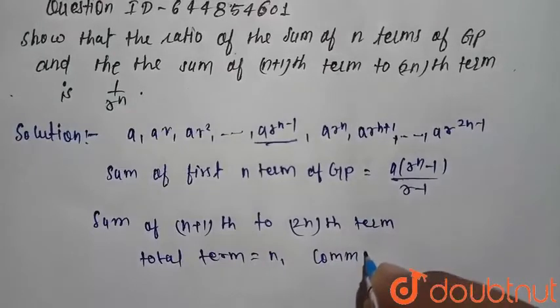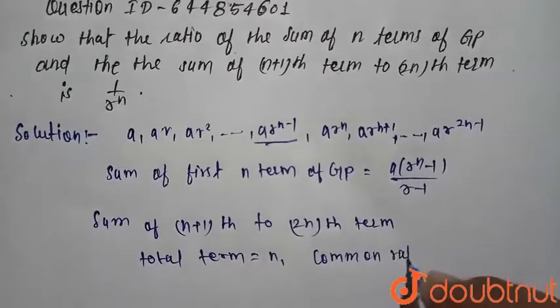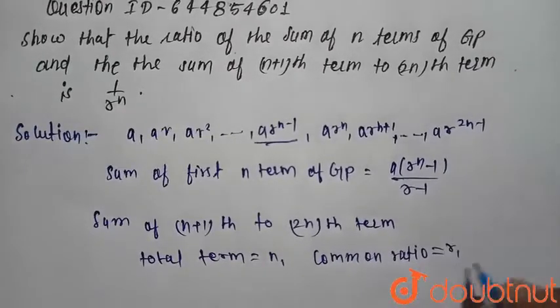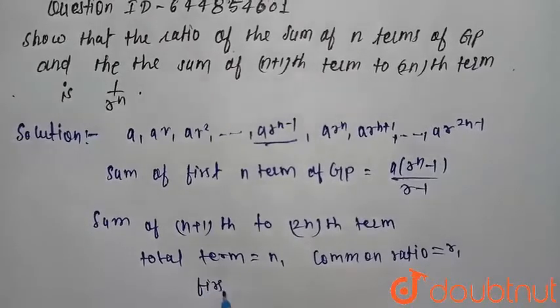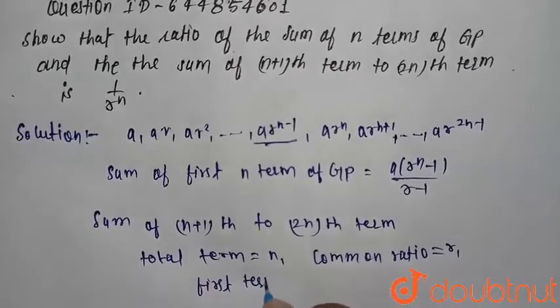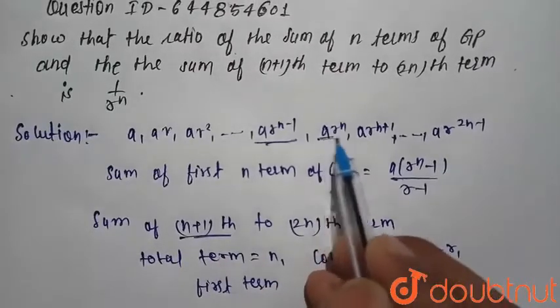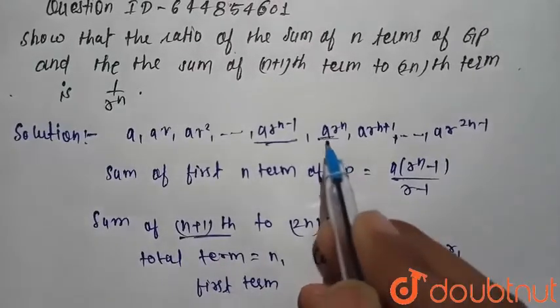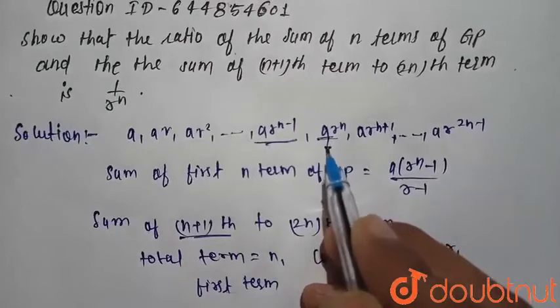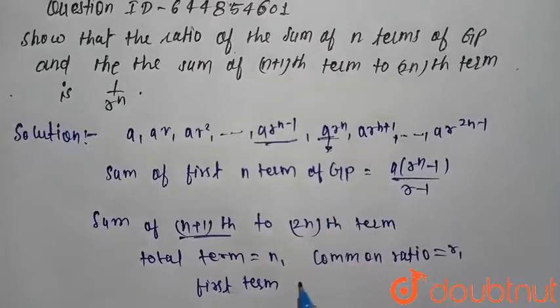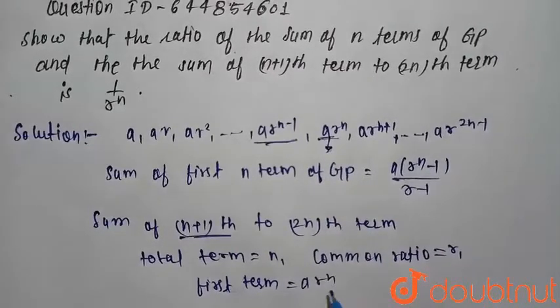Common ratio is r, and the first term of this sequence, the n plus 1 term, so first term is the nth term, which is ar raise to power n.